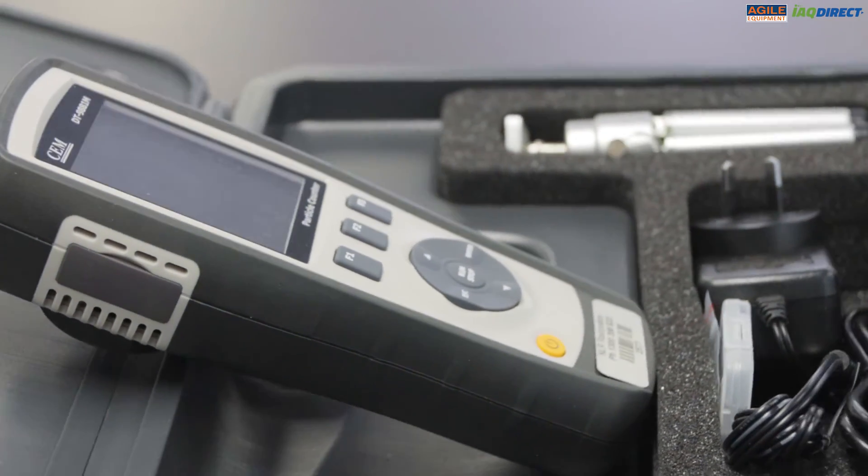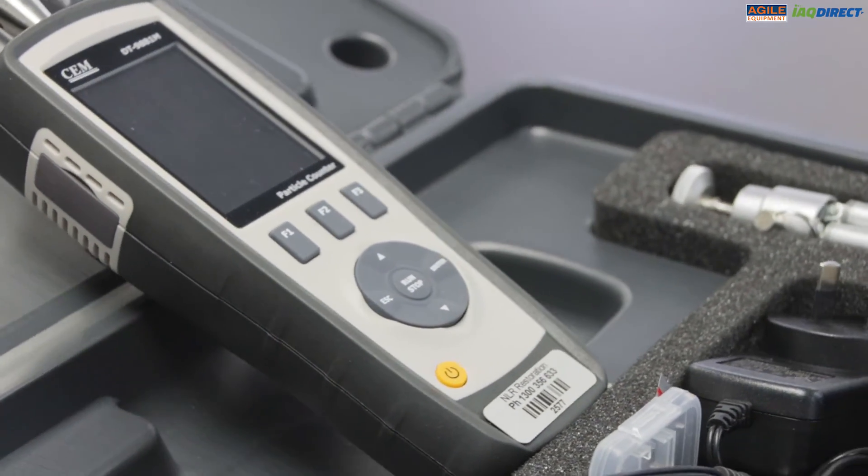Here at Agile Equipment, we recommend buying the 81M or the 83M particle counters to help improve your level of professionalism and efficiency. You can base your conclusions on real-time evidence to help your client make informed decisions, whether that's in mould remediation, fire damage restoration, air quality monitoring, or laboratories.